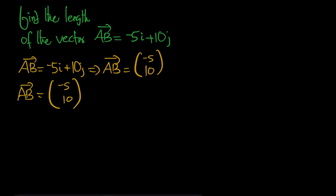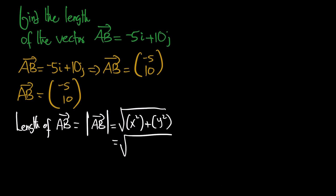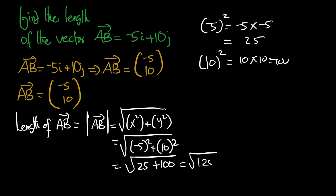To find the length, we apply the magnitude formula: square root of x-squared plus y-squared. Our x is negative 5, squared gives 25; our y is 10, squared gives 100. So we have square root of 25 plus 100, which is square root of 125. Negative 5 times negative 5 is 25, and 10 times 10 is 100.